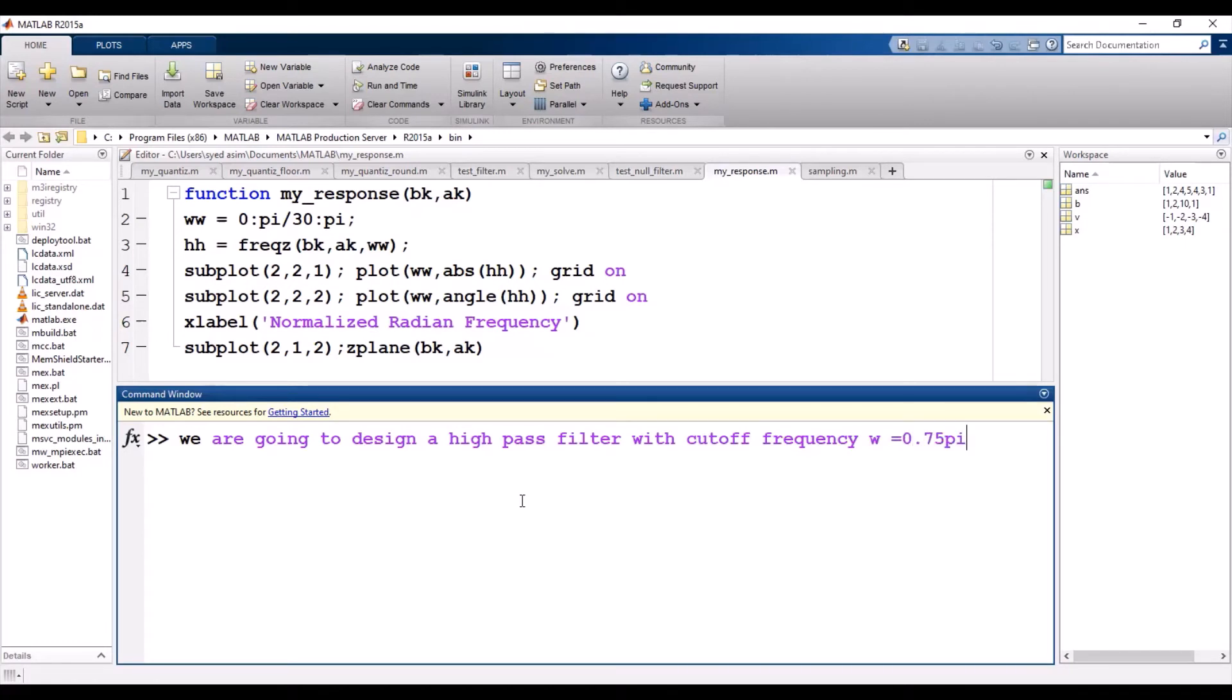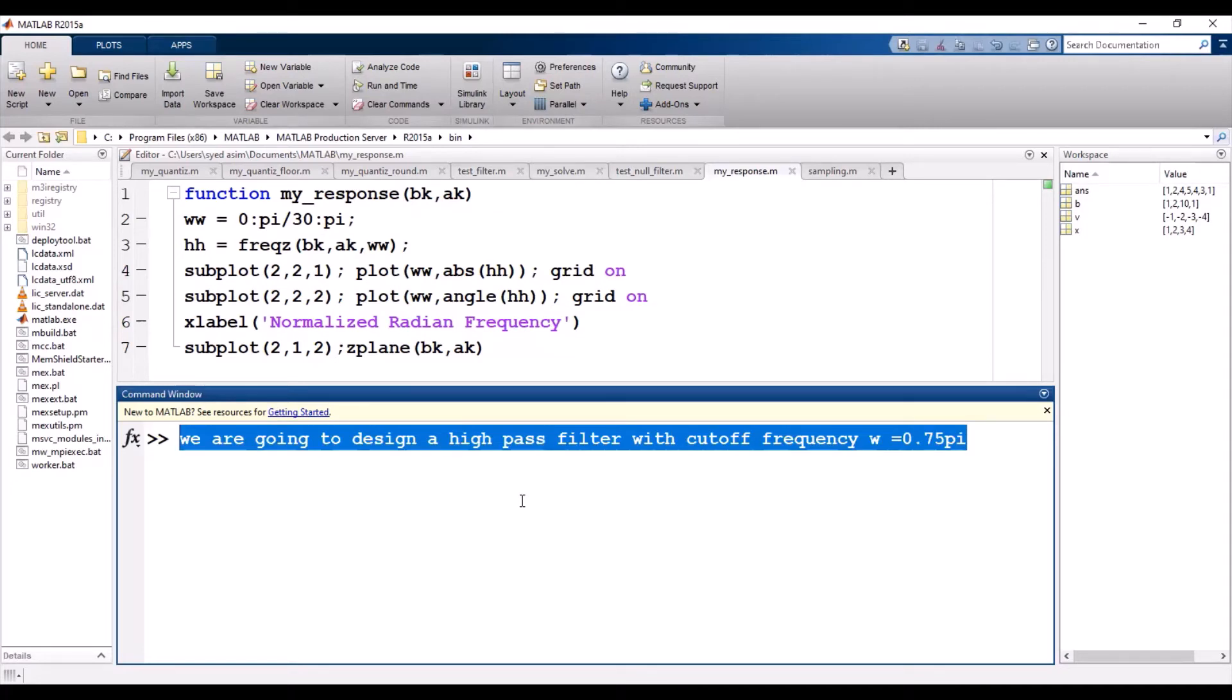If you want to implement this with FIR filter, you need to cascade number of systems. Again, the flexibility in the IIR system is we don't need to cascade systems. We just need to calculate the value of alpha.